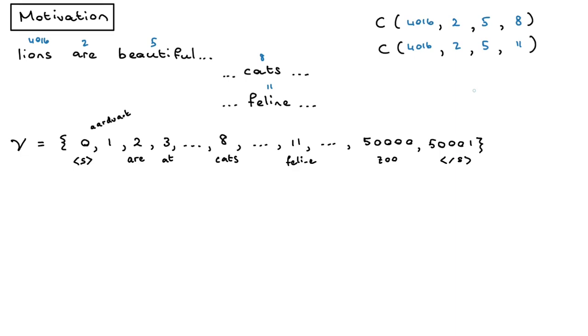And we would store these counts, and then if we want, for instance, the probability of cats being preceded by lions are beautiful—I really like cats, never thought I did, but then we got one in the COVID years and now I really like Luna—if we want the probability of cats given that lions are beautiful, then we would do the count of 4016258 divided by the number of times we see lions are beautiful. And that's how we would estimate this probability, maybe with some discounting, some fancy stuff if you're into that, but that's basically the basic idea.